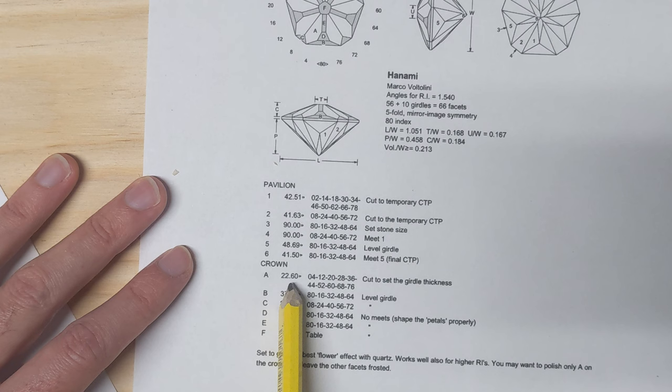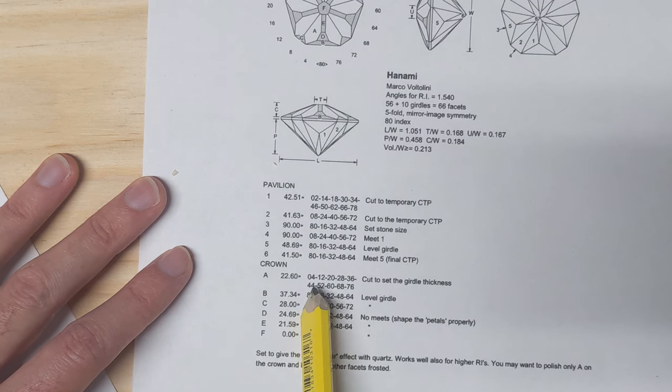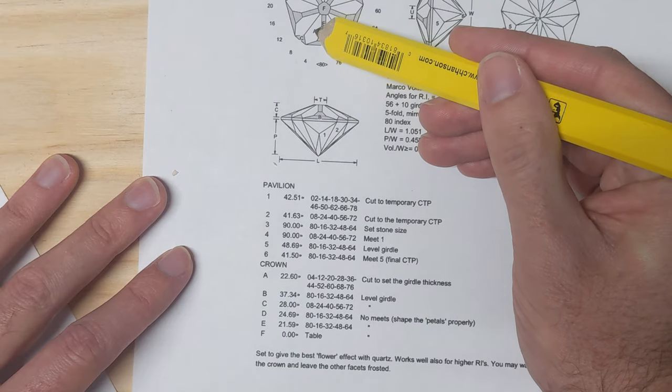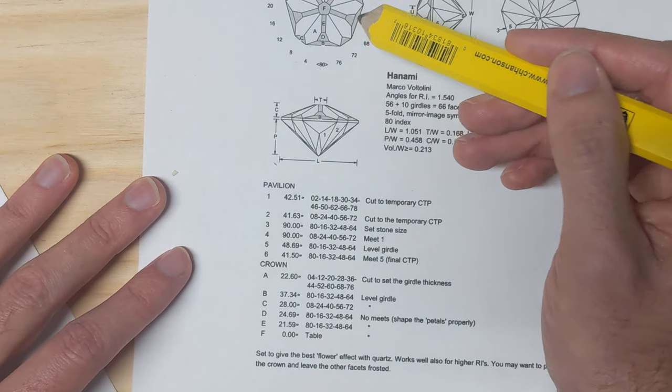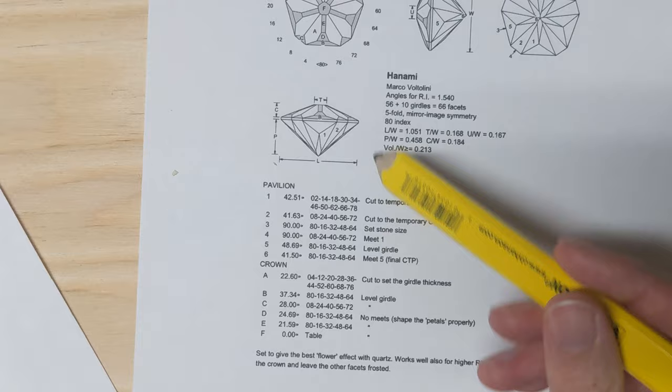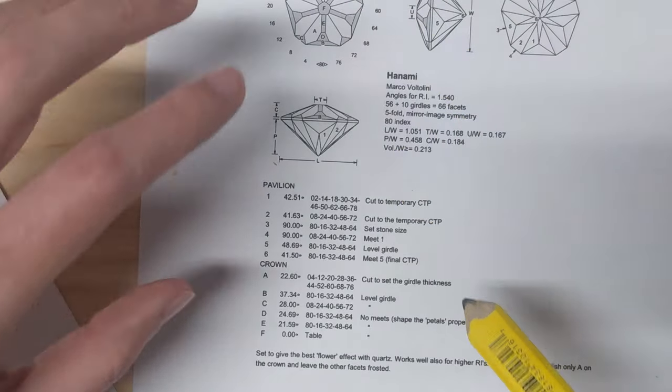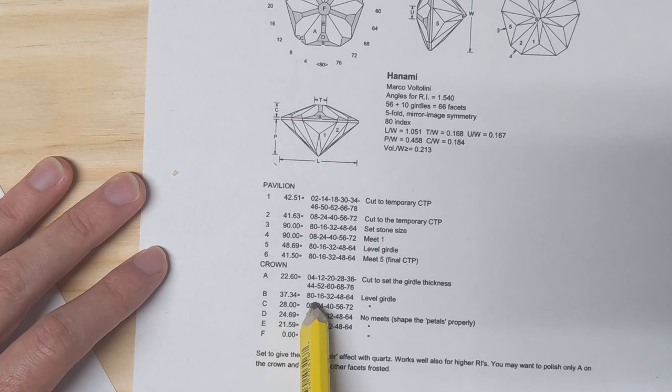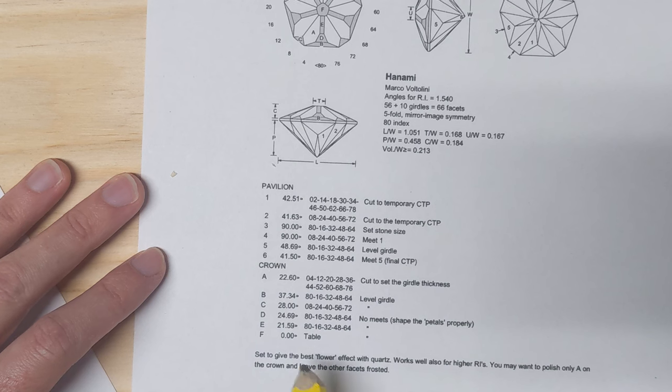Switch over to the crown, set it to 22.6 degrees. You have 12 facets here to cut in, and you set the girdle thickness with this. So that's crown A, which is these. These are the main petals of the flower. Then you'd cut in the other facets to meet those at the girdle line, as shown here by 37.34. These six, you level the girdle, same thing with 28 degrees, or crown C, crown B.